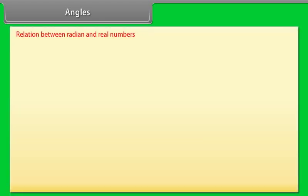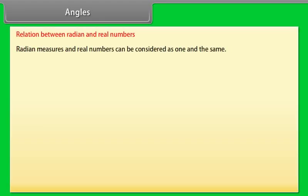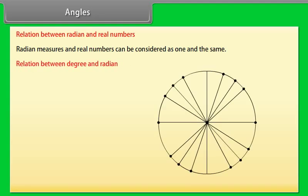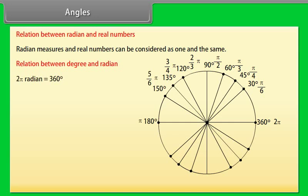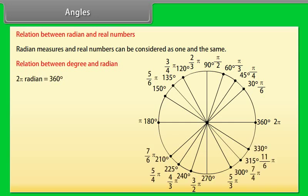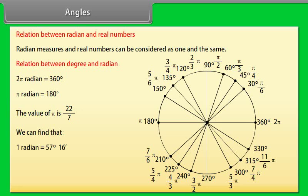Radian measures and real numbers can be considered as one and the same. The relation between degree and radian: 2π radians equals 360 degrees, and π radians equals 180 degrees. The value of π is 22/7. We find that 1 radian equals 57 degrees 16 minutes, and 1 degree equals 0.01746 radians.